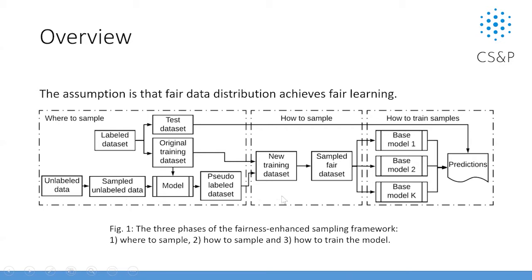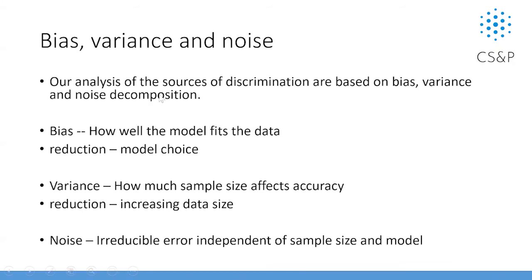These three pieces address different types of error. Bias is how well the model fits the data — we can make different model choices to reduce bias. Variance can be improved by increasing the dataset. Noise is an irreducible error, independent of sample size and model — we can hardly decrease noise. So these three types — bias, variance, and noise — are addressed by the three pieces of our method.